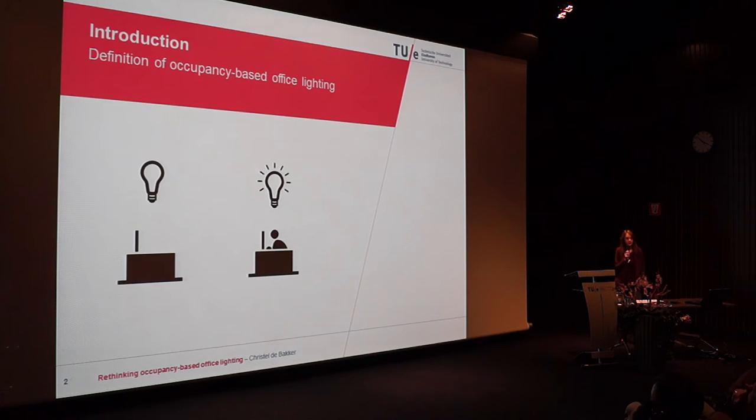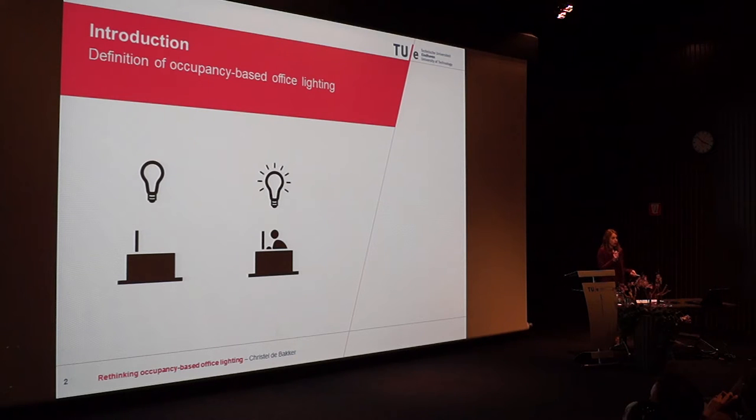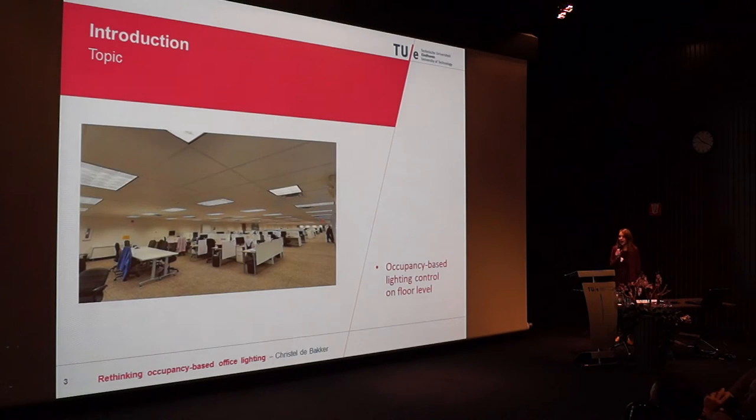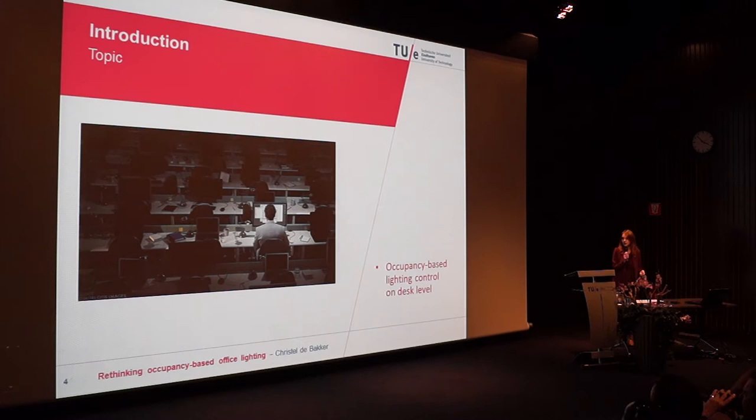What do I mean with occupancy-based office lighting? The principle is quite simple. Lighting remains switched off if nobody is present in the office. As soon as someone enters, lighting switches on. I want to focus on open plan offices, where the lighting is actually controlled far from optimally. We see either lighting controlled on a floor level — meaning lighting is on as soon as someone is present on the floor — or the other extreme, where lighting is controlled on an individual basis depending on individual occupancy.